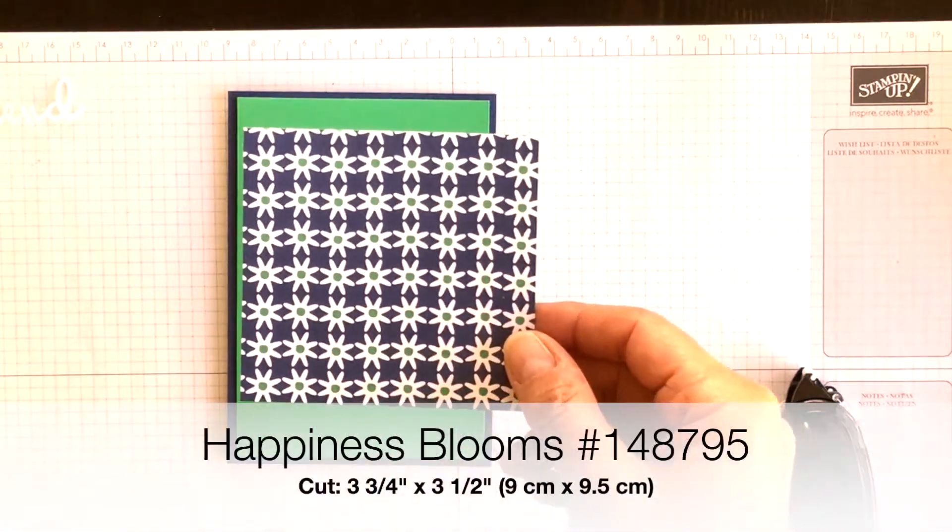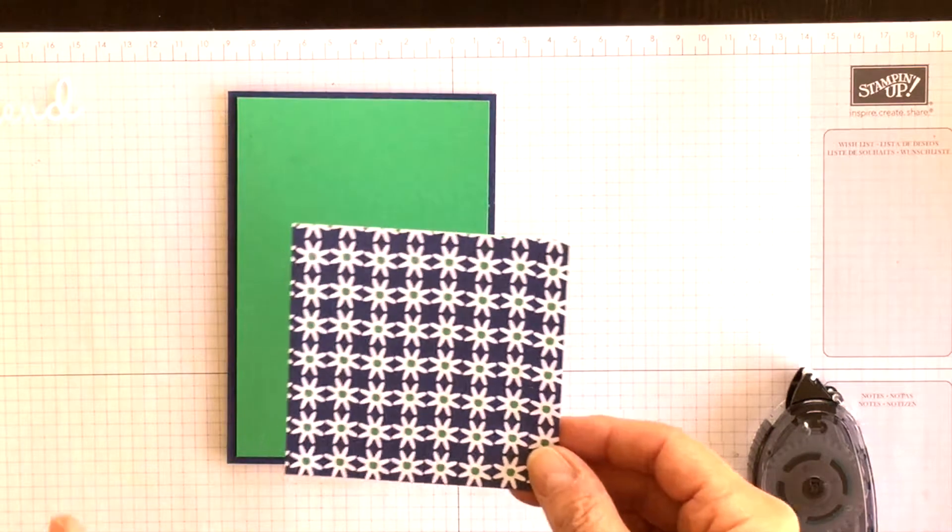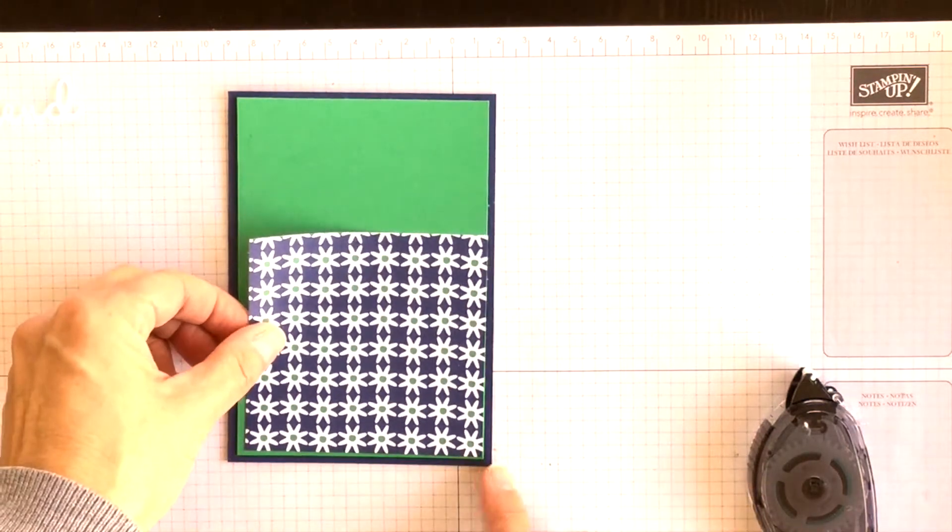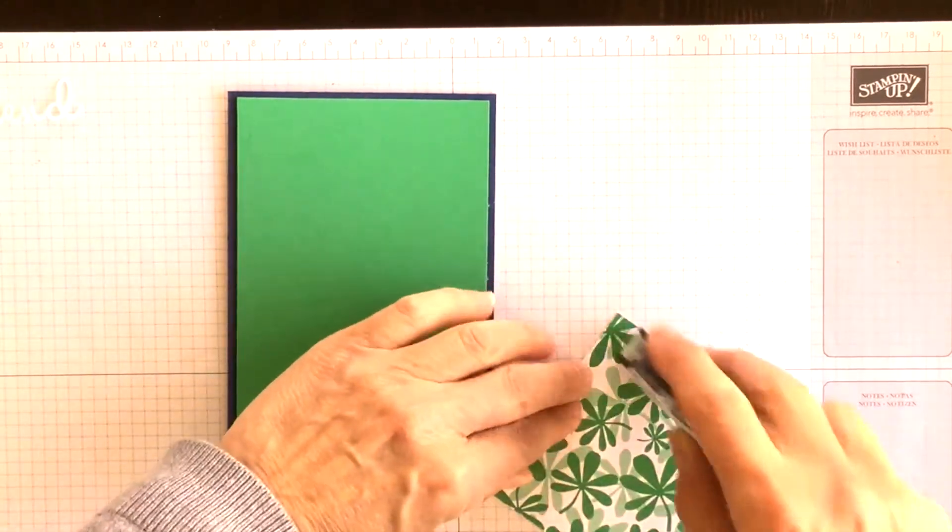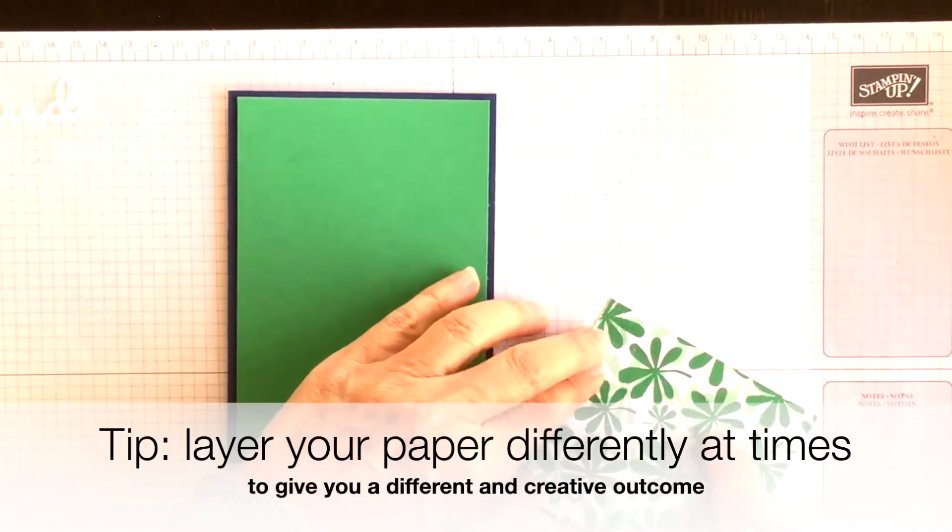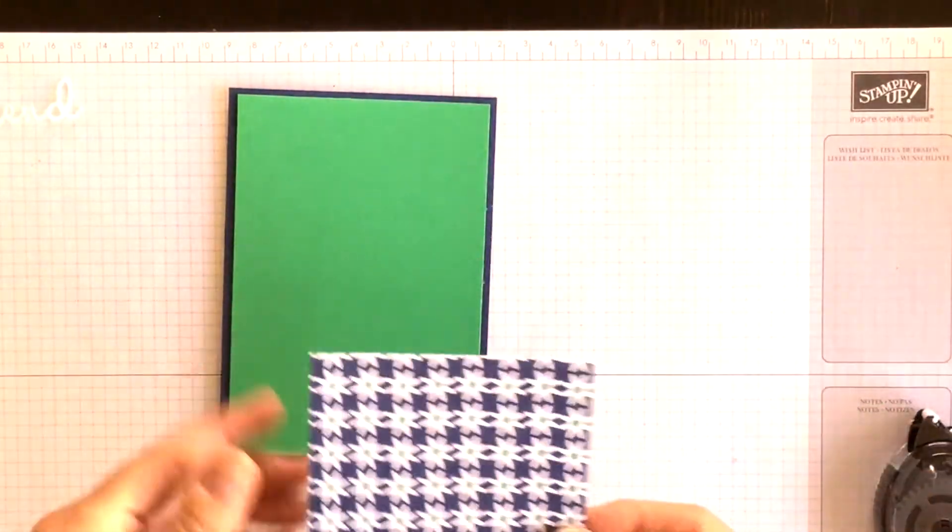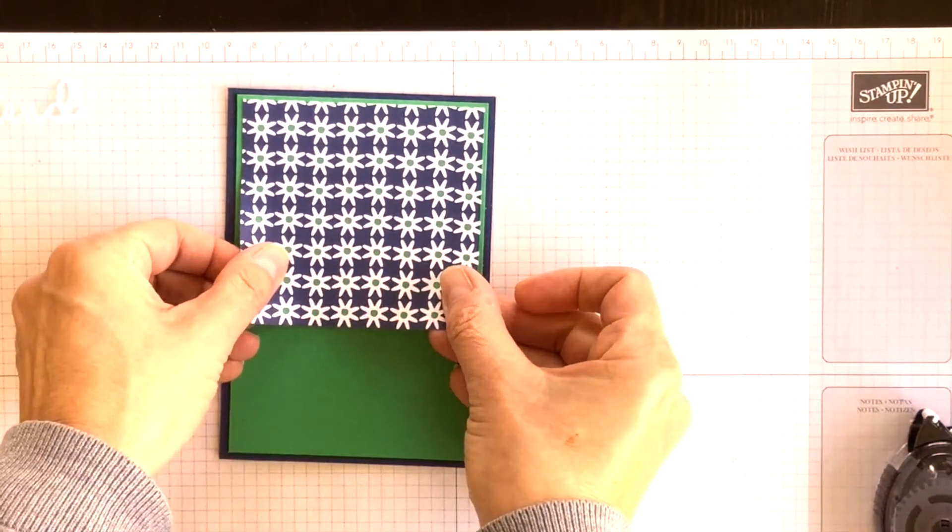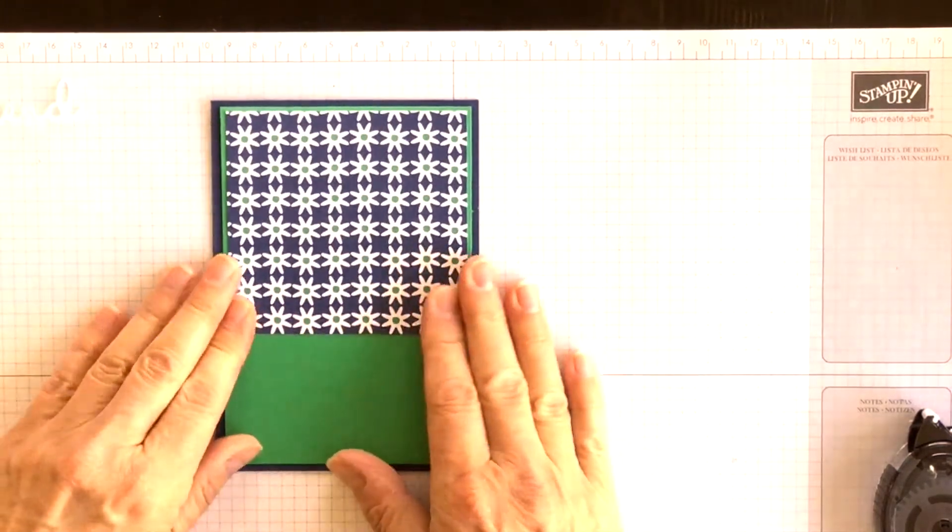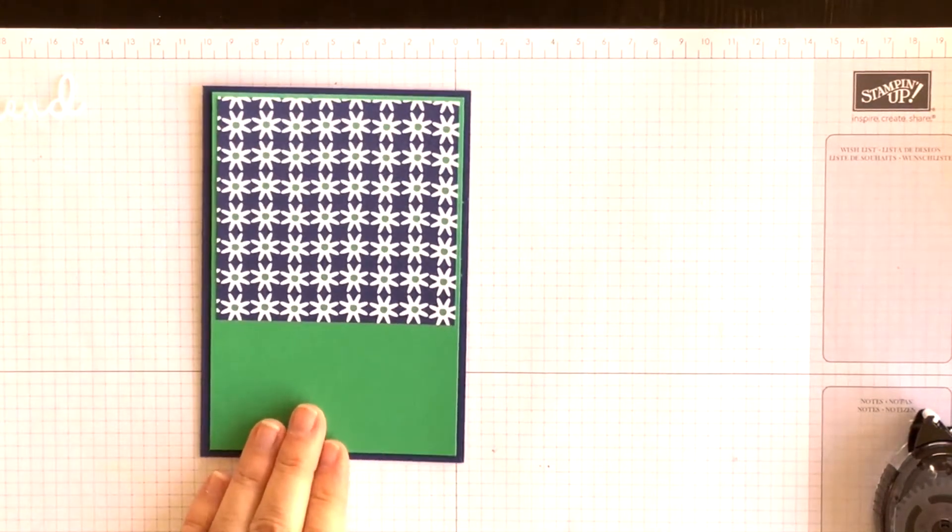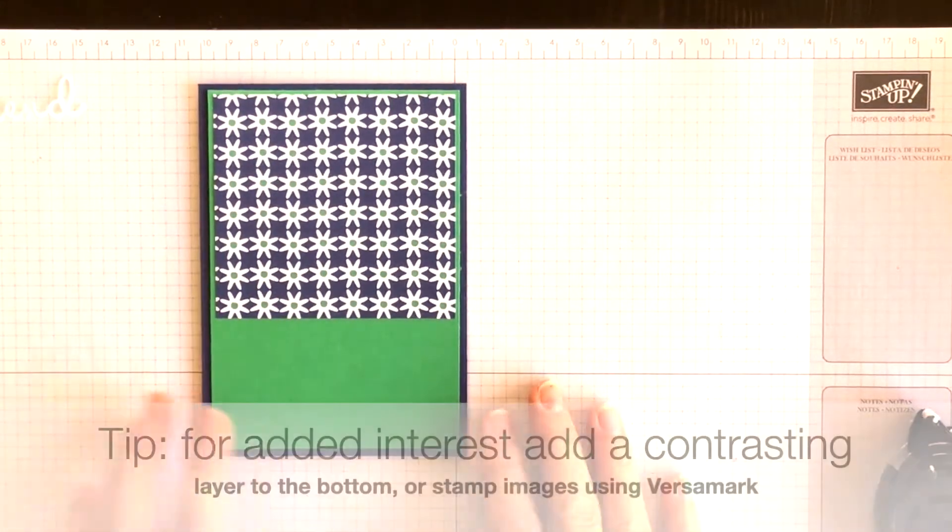I am absolutely smitten with this paper and I'm so sad that it's retiring. Now normally I would attach my Designer Series Paper at the bottom of my card front but not this time. I'll also show you at the end of the video what I'm going to do for the inside of my card because several of you have asked me to share that. All right, so I've got my card starting to take shape.